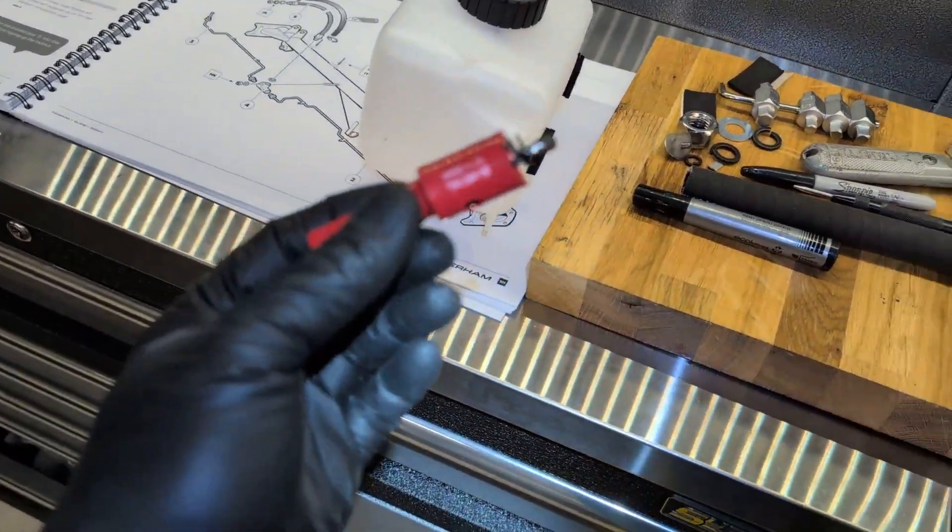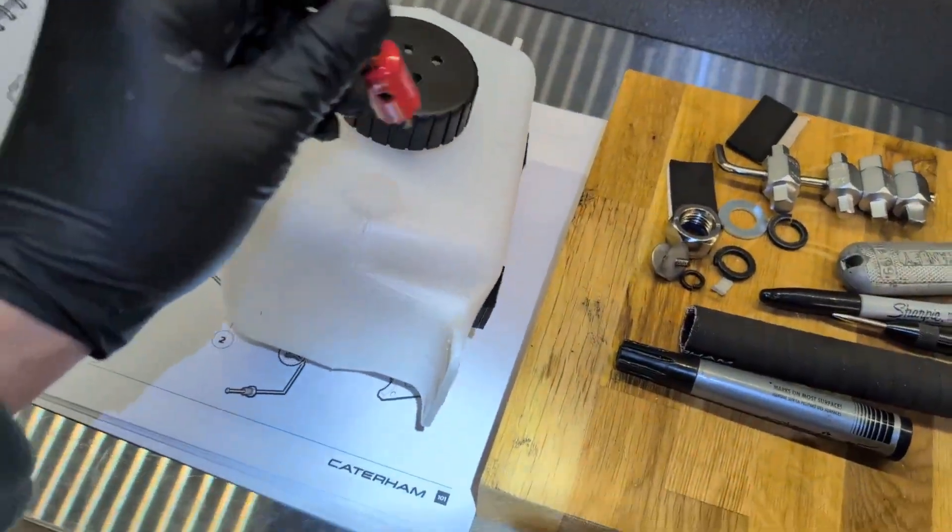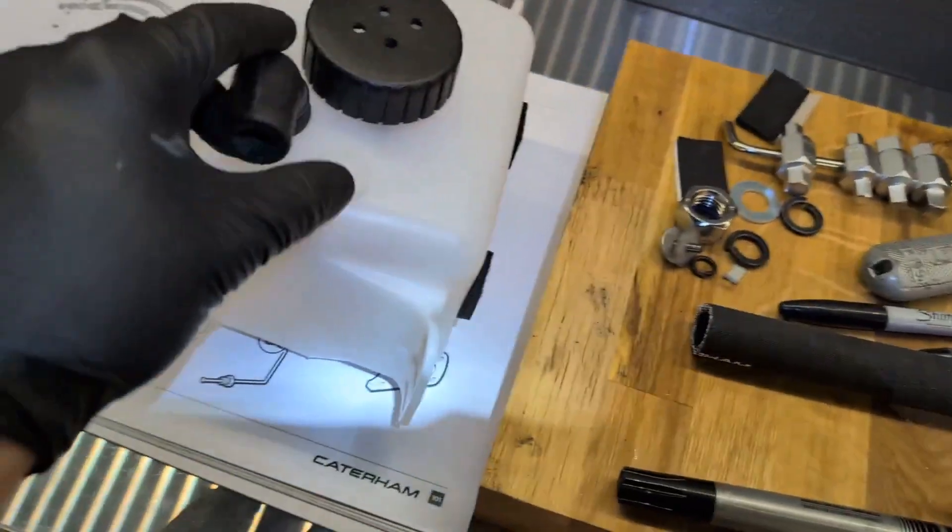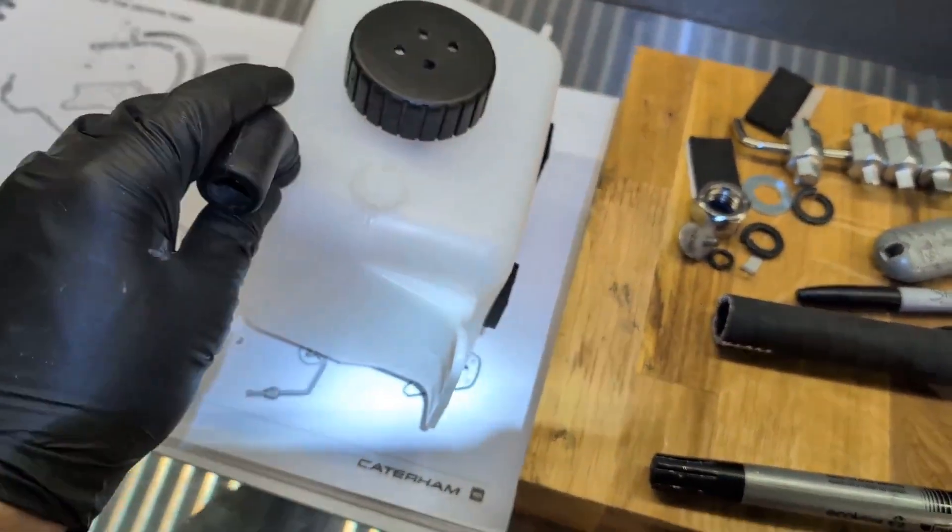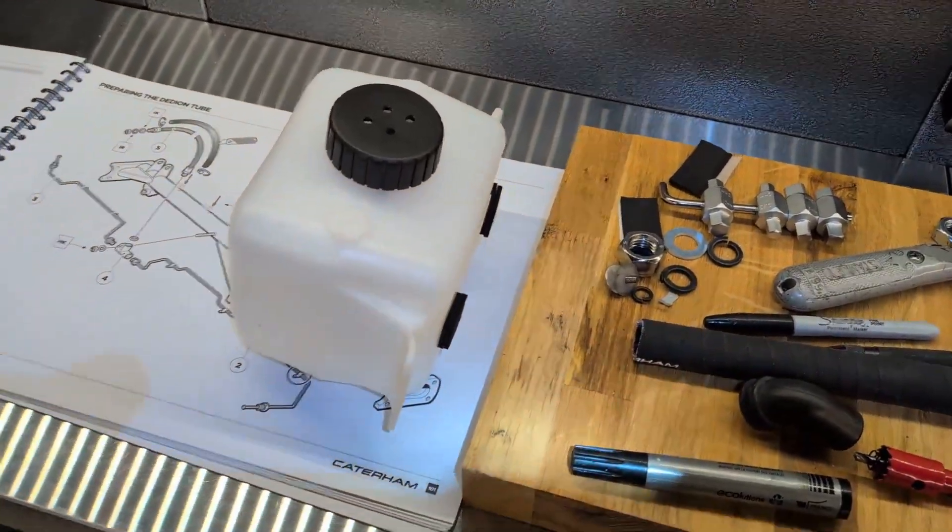Final little job for tonight is my 19mm hole saw arrived. So I'm going to plonk some holes in here. And then put two of these elbows in. And then connect up the breather hoses for the catch can. So I'll knock that out quickly now. And then we'll call it a wrap, I think.